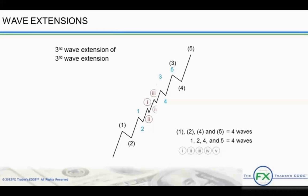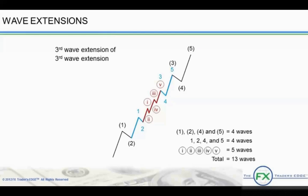Notice that none of the three Elliott Wave rules have been broken. Notice too that in the 13-wave sequence, we have a series of 1, 2 patterns. Specifically, we have a 1, 2, 1, 2, 1, 2 pattern before continuing on.